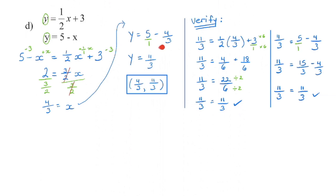We need a common denominator — my lowest common denominator is 3. So I've got 15 thirds; 15 minus 4 is 11, and the denominator stays the same. I'm going to verify it by substituting back into the first equation: Y is 11 thirds equals one half times X is four thirds. Multiplying the numerators gives 4, multiplying the denominators gives 6. When we go to add the fractions we again need a common denominator — the lowest common denominator will be 6. So I'm going to multiply the numerator and denominator by 6 to keep them equivalent, add the numerators, keep the denominator the same, and reduce to see if the left side equals the right side. You're going to do that for each equation.